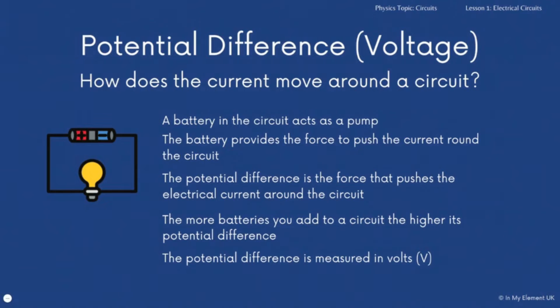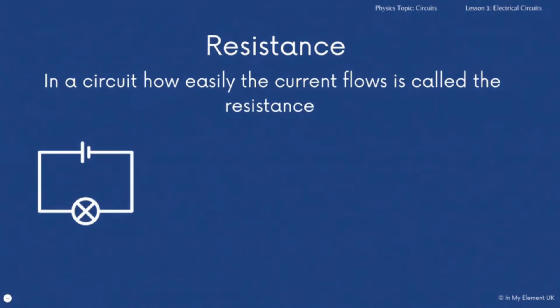You've got to learn that symbol — you'll need to know it in key stage three and key stage four. You might see it labelled on some appliances, on the box, or on the information when they're talking about mains supply. So we've covered current and we've covered potential difference. What you also need to know about is resistance.